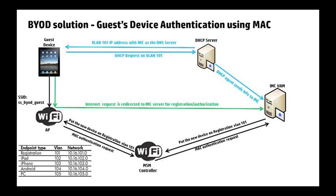Now the guest device tries to connect to the internet. Because of the DNS server information, that internet request is redirected to a website running on the IMC server — the registration site. Depending on the rules set up by the administrator, a new guest could either register themselves for guest access or have an ID and password provided to them. After a successful registration process, the IMC server sends a message to the MSM controller telling it to disassociate that device from the registration VLAN and reassociate it to the VLAN appropriate for that device — in this case, VLAN 102.